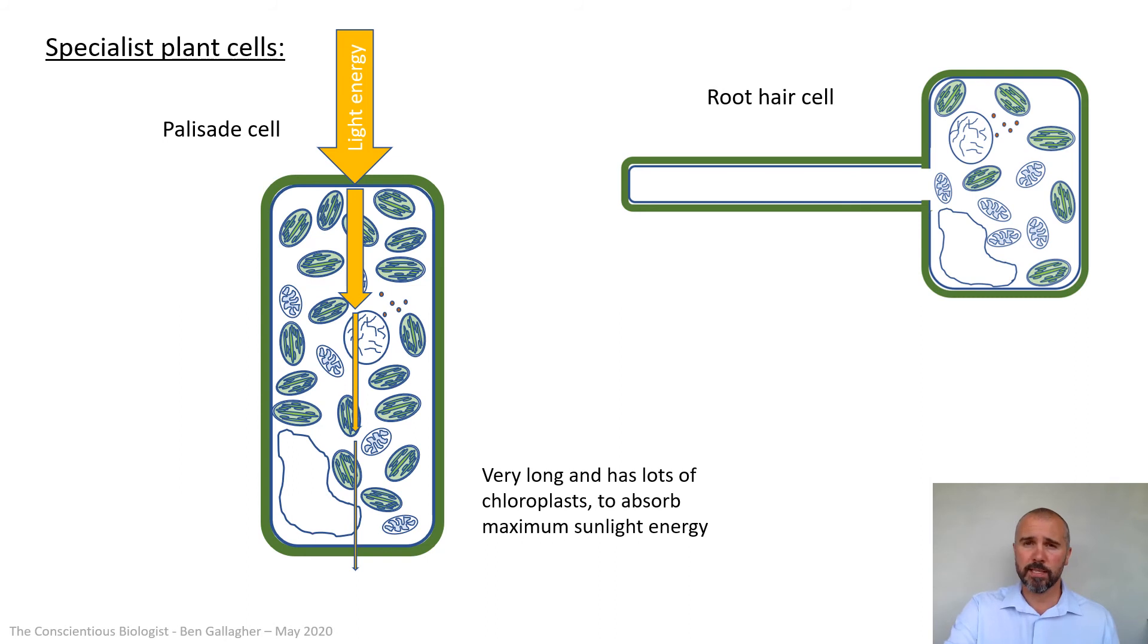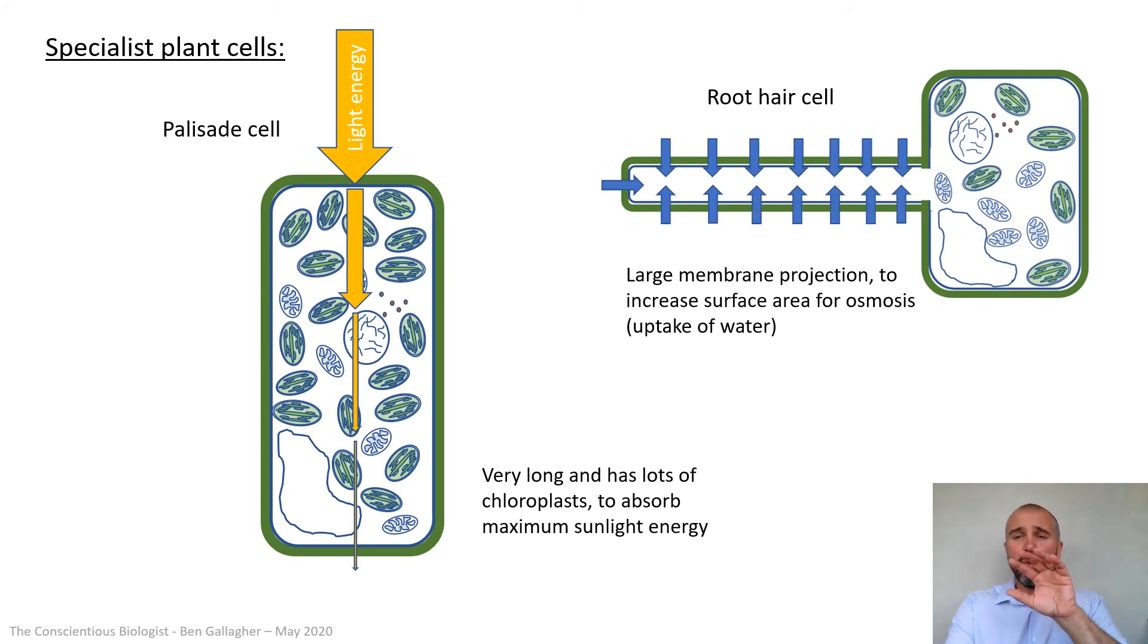Your second example is a root hair cell. This is in the root of a plant and it has this very long projection, this membrane projection to increase its surface area for osmosis because roots need to absorb the water. And by having all that extra membrane, they've got way more space in which they can absorb water to take it into the plant. Again, we'll look at those in far more detail when they're relevant to your topic, but I want them in your heads now. And if you're keeping a list of these are all the specialist cells I need to know, then these two should definitely be on that list.